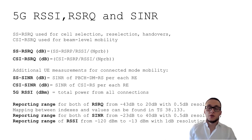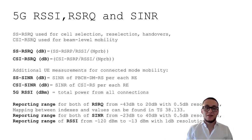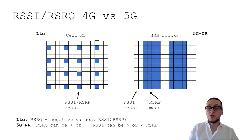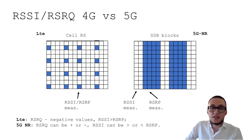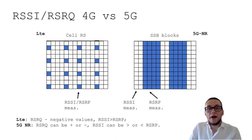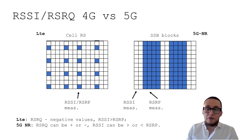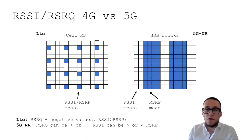SINR is a signal-to-noise ratio measured on either PBCH demodulation reference signals or channel state information reference signals, measured on each resource element. There is a big difference between RSSI and RSRQ in 4G and 5G. In 4G, cell reference signals are transmitted for the whole bandwidth and the whole time. Looking at the 4G grid on the left and the 5G grid on the right: in 4G, RSSI and RSRP measurements are based only on cell reference signals, whereas in 5G, RSRP for SSB blocks is measured on demodulation reference signals.